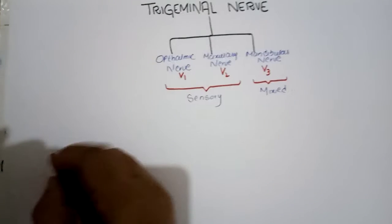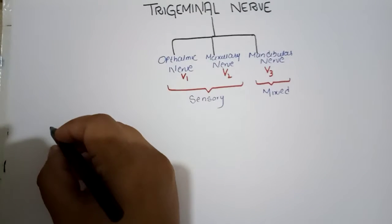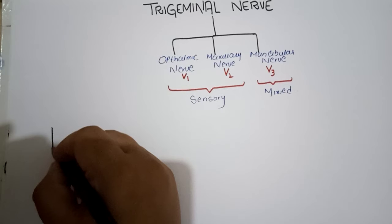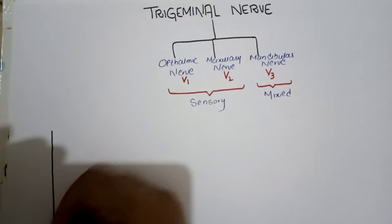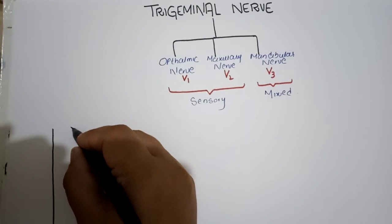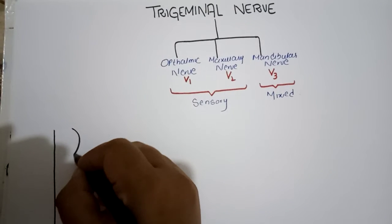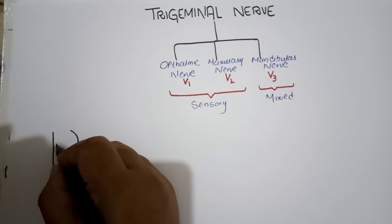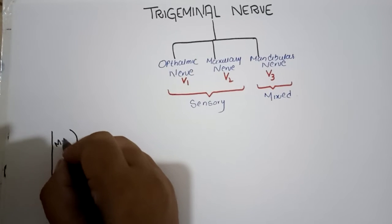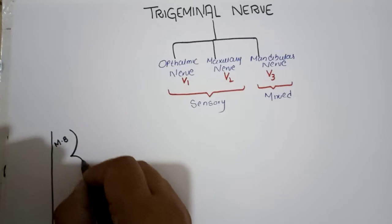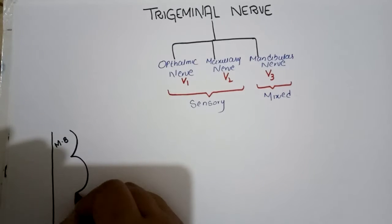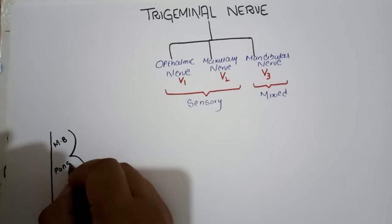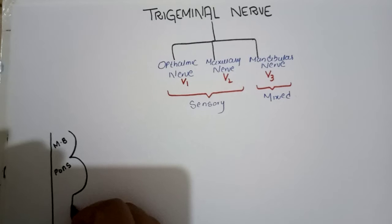Now I will explain the course of the trigeminal nerve. Here is the brain stem, and these are the three parts of the brain stem: the midbrain, then the pons, and the third one is the medulla oblongata.